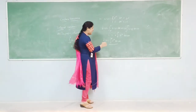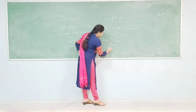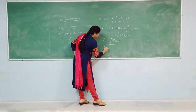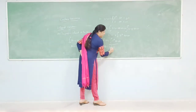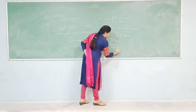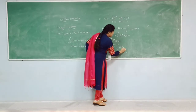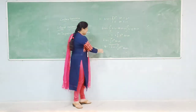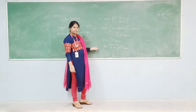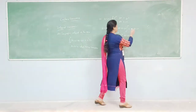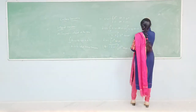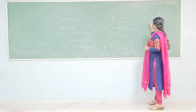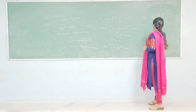This is called the Laplace transform. It is defined by L{f(t)} = f̄(s) = integral from 0 to infinity of e^(−st) into f(t) dt, which equals F(s). Here L is the Laplace operator, and f(t) = L⁻¹{F(s)}, where L⁻¹ is the inverse Laplace transform.